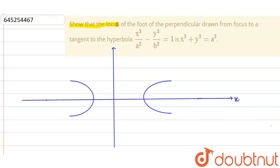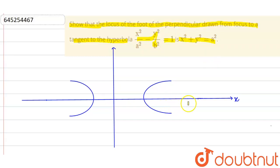Hello everyone. Our question is: show that the locus of the foot of perpendicular drawn from a focus to a tangent to a hyperbola x²/a² - y²/b² = 1 is x² + y² = a².